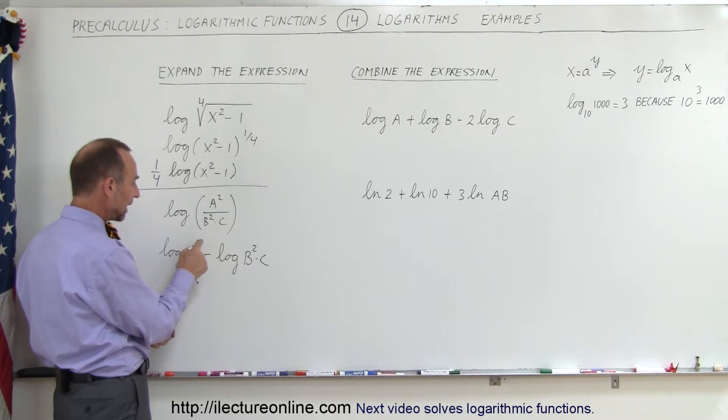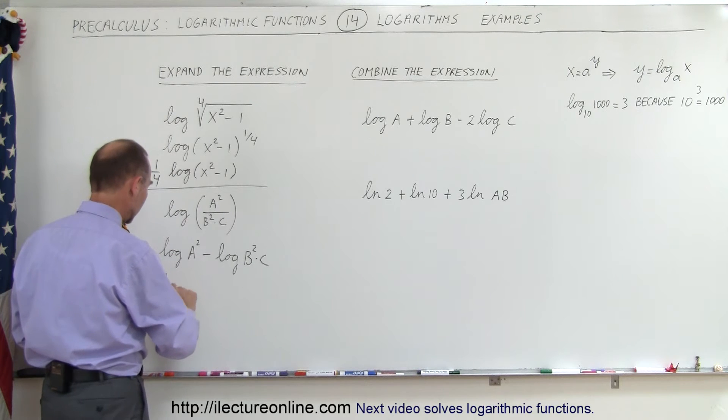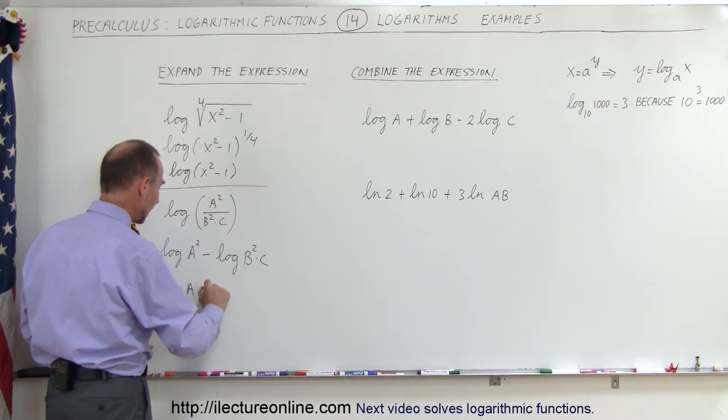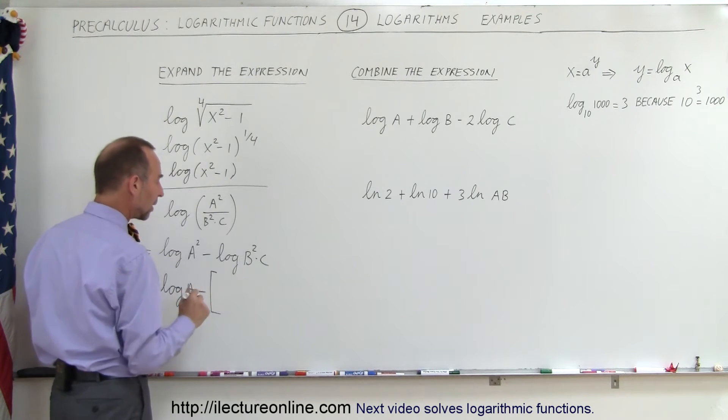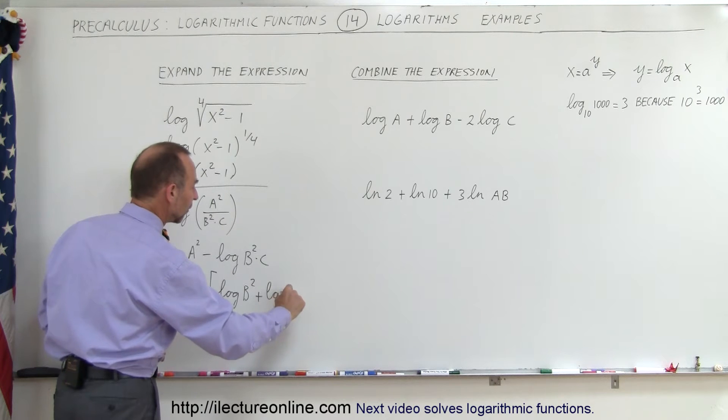Then here we can use the rule where we take the exponent here and put it in front, so this can be written as two times the log of a minus, and here we have a product, so this can be written as the log of b squared plus the log of c.